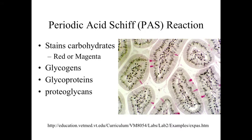There are some specialized stains we'll look at throughout the course. One example is the periodic acid-Schiff reaction, or PAS reaction, which is a specialized stain for carbohydrates. Glycogens, glycoproteins, and proteoglycans stain red or magenta. You can see in this example that goblet cells are staining a purplish or reddish color — a specialized stain we can use to study these structures.